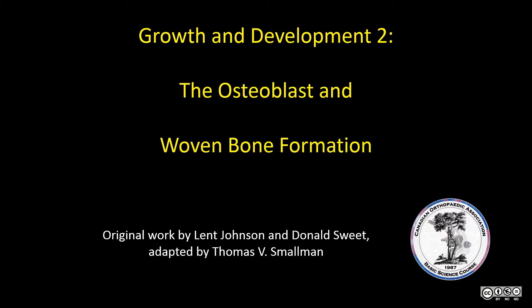Mesenchymally derived, the osteoblast creates the skeleton. In so doing, 9 of 10 osteoblasts die, providing products for the process. Most of the remaining cells become osteocytes, which represent 95% of the cells in the skeleton. The few remaining cells line the endosteum of all bones.